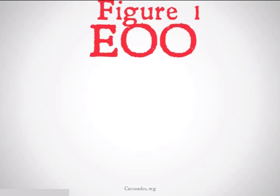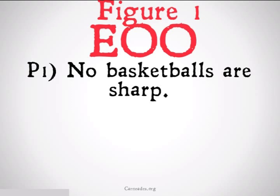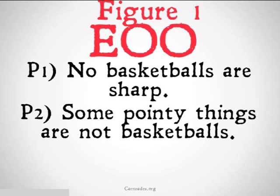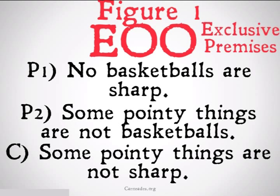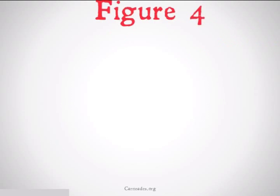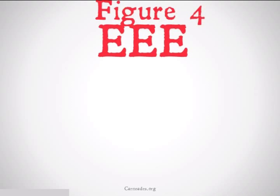Figure 1 EOO is going to commit the fallacy because: no basketball is sharp; some pointy things are not basketballs; therefore, some pointy things are not sharp. This clearly commits the fallacy because E and O statements are both negative, so we're not going to be able to go anywhere with this argument. Therefore, it commits the fallacy of exclusive premises.